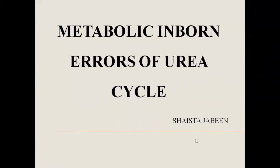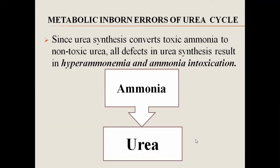Today's topic is the metabolic inborn errors of urea cycle disorders. The urea cycle takes place to convert the toxic ammonia that comes as a result of the catabolism of protein. Ammonia is toxic and must be eliminated from the body when it exceeds the body's needs. So it is converted into the less toxic substance, urea, which is then eliminated from the body, minimizing the harmful effects of ammonia.